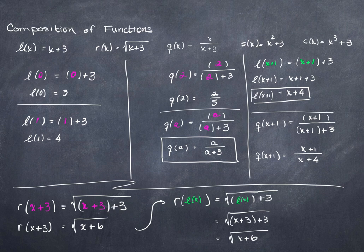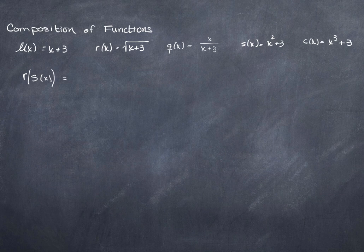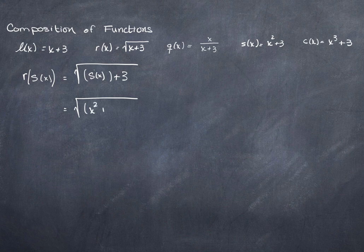Let's try R with S plugged into it. That's the function R of x — the square root of x plus 3 — with the function S plugged into it. That's going to be the square root of S of x, which was x squared plus 3. Then simplify: x squared plus 3 plus 3 is x squared plus 6. So R of S of x equals the square root of x squared plus 6.